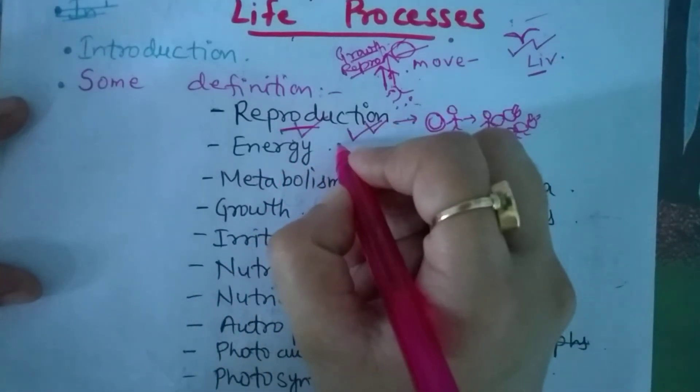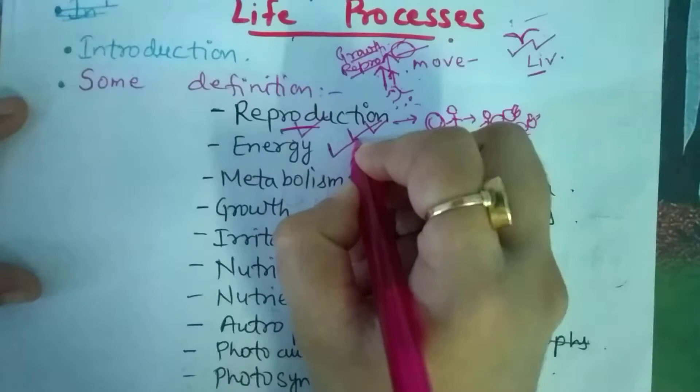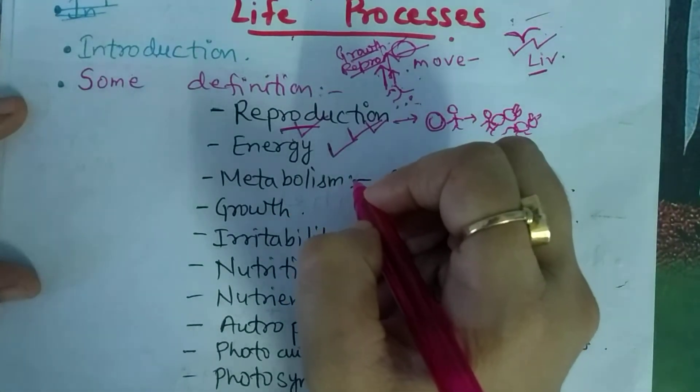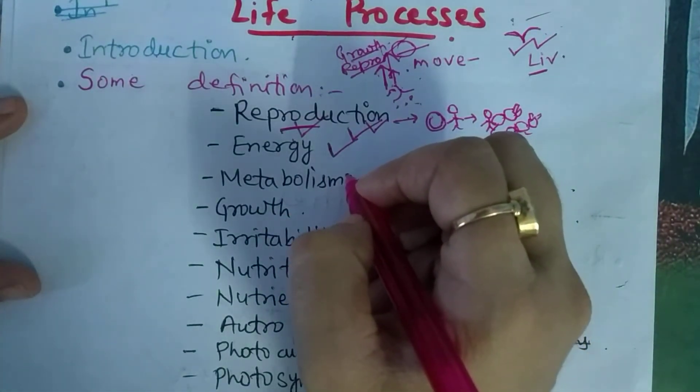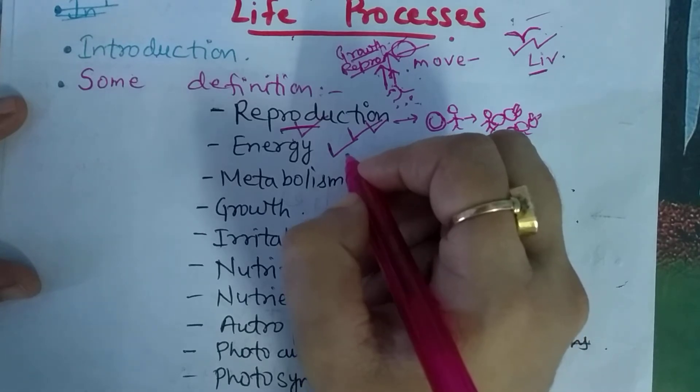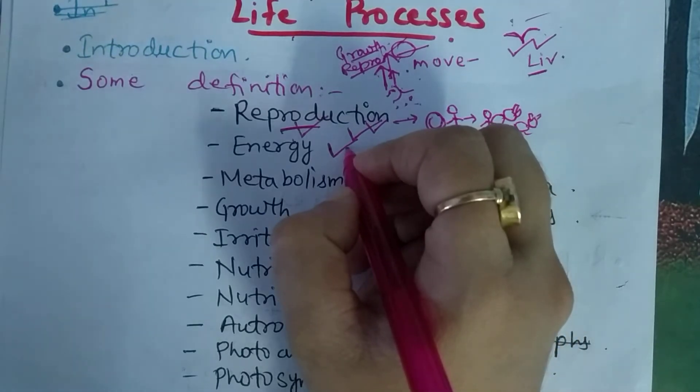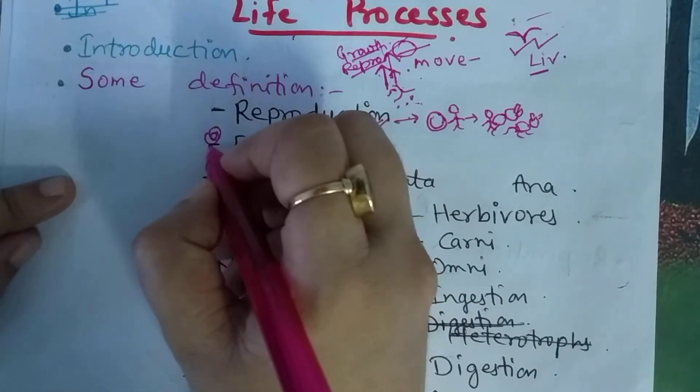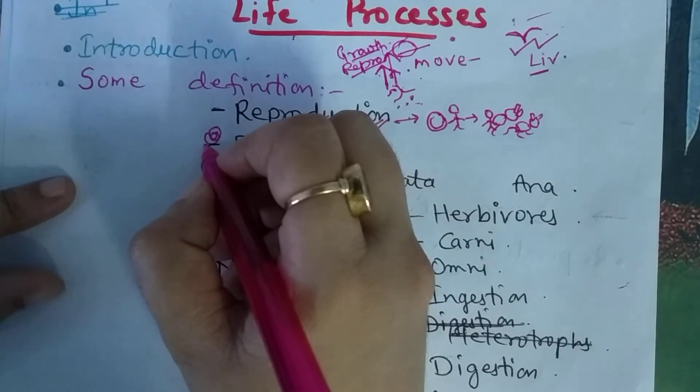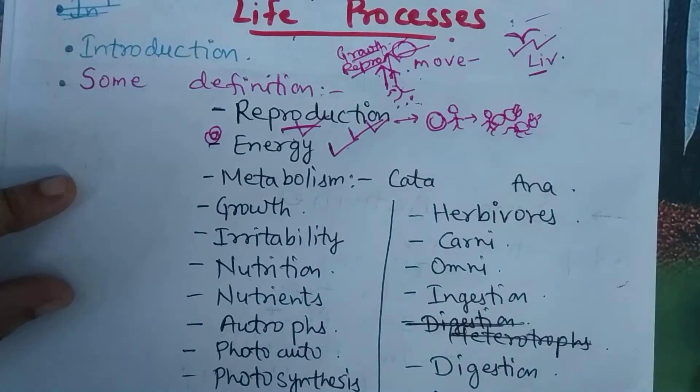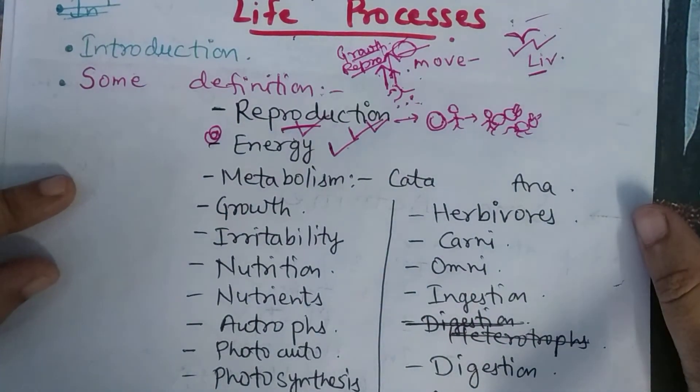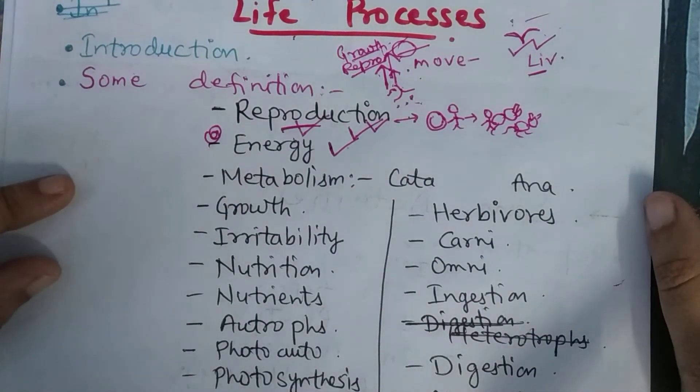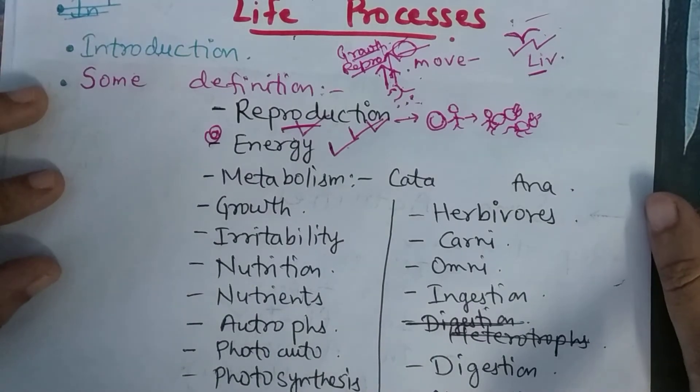The next term that is most important is energy. What is energy? Energy is the capacity to do work. It means the ability to perform something. Suppose I want to lift a table from one room and take it to another room, then for that I need energy. So energy is the capacity to do work.